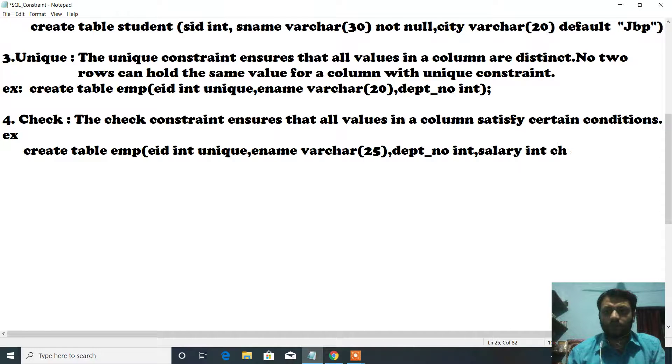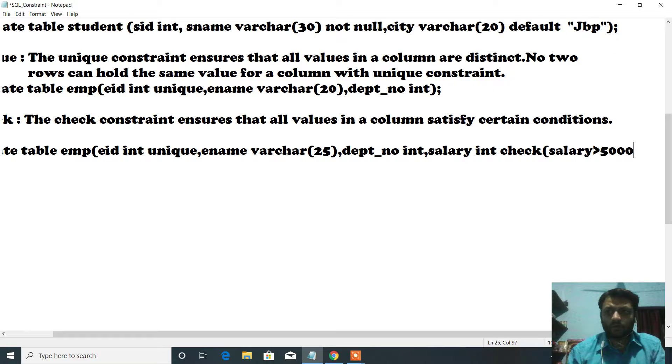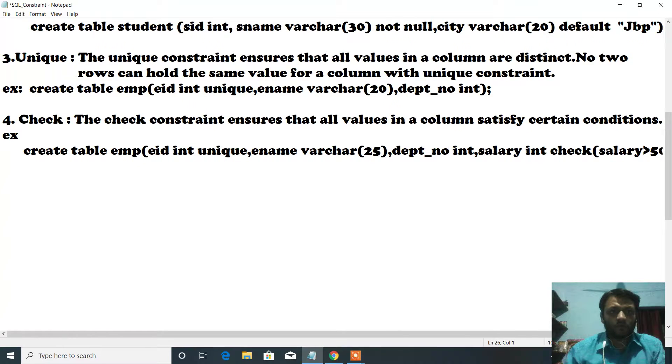Simply write the column name salary greater than 5000, and close this table. This is the way to create the check constraint in a table.